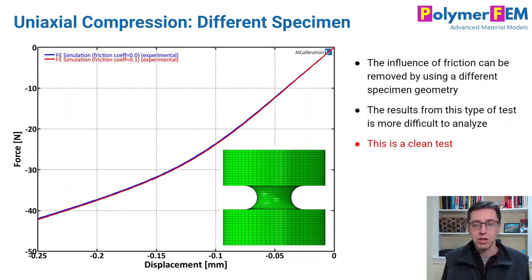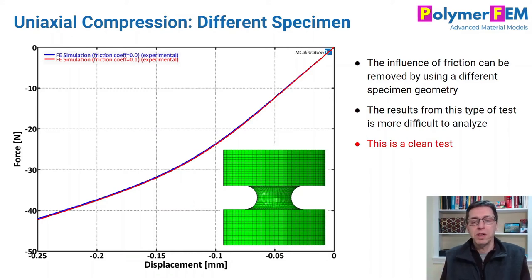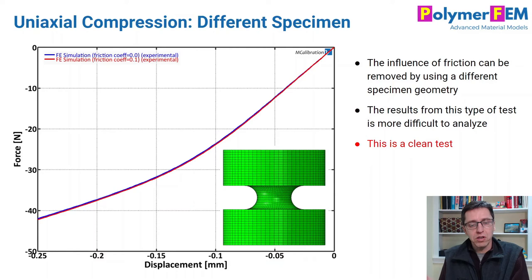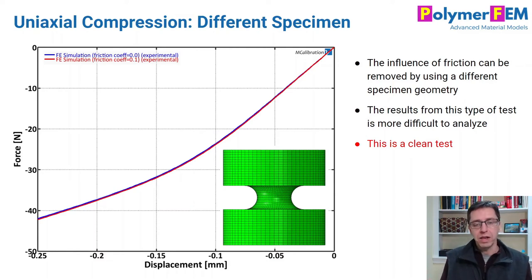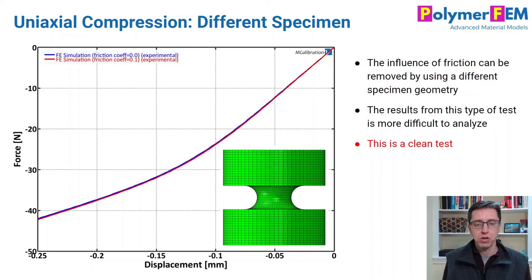The challenge in a case like this is that it's a clean test but hard to analyze. You have to weigh the benefits of accurate data with clear boundary conditions against the complexity of analysis, because you need to do an inverse finite element simulation approach to handle this geometry. The stress and strain is not homogeneous everywhere, but you can certainly work with it if that's something you want to pursue.